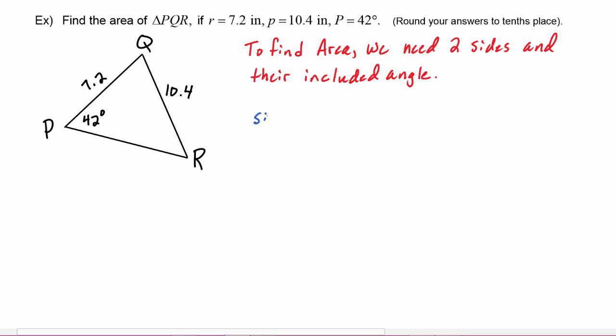The sine of R divided by its opposite side 7.2 has to equal the sine of 42 degrees divided by its opposite side 10.4. We'll cross multiply the 7.2 up to the right hand side. Now we have sine of R is equal to 7.2 times the sine of 42 degrees divided by 10.4.